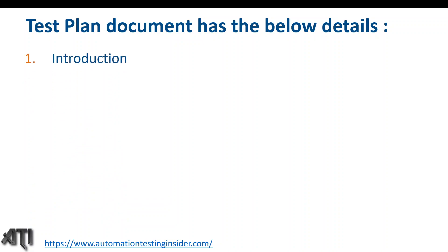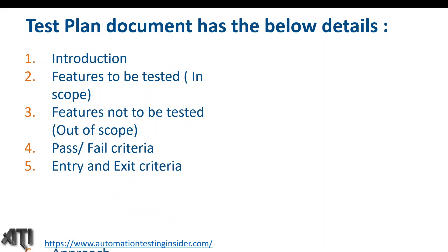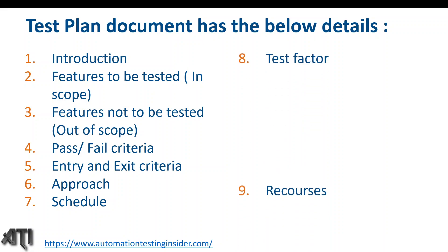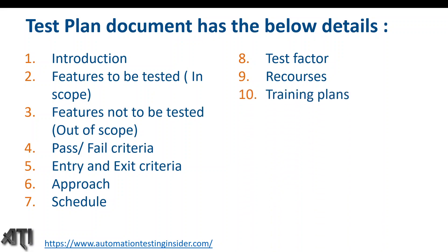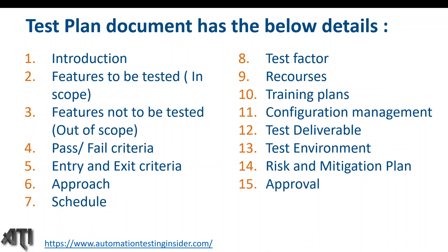Now let's talk about the different sections in a test plan document. The test plan has the following details: introduction, features to be tested (in scope), features not to be tested (out of scope), pass/fail criteria, entry and exit criteria, approach of testing, schedule of testing, test factors, resources, training plans, configuration management, test deliverables, test environment, risk and mitigation plan, and approval of the test plan.